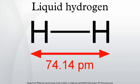Liquid hydrogen is also used to cool neutrons to be used in neutron scattering. Since neutrons and hydrogen nuclei have similar masses, kinetic energy exchange per interaction is maximum. Finally, superheated liquid hydrogen was used in many bubble chamber experiments.